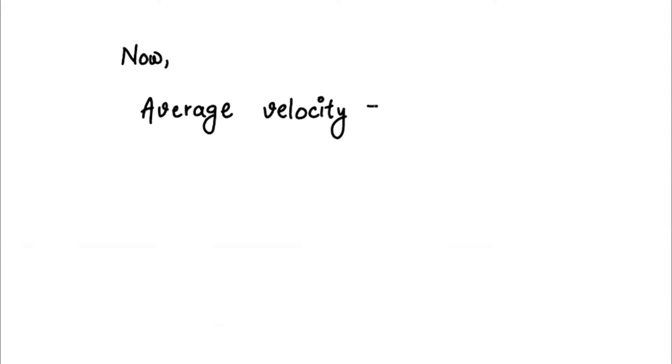Now we derive our formula by using the formula of average velocity, which is u plus v divided by 2. So we have our initial velocity as u and our final velocity as v.